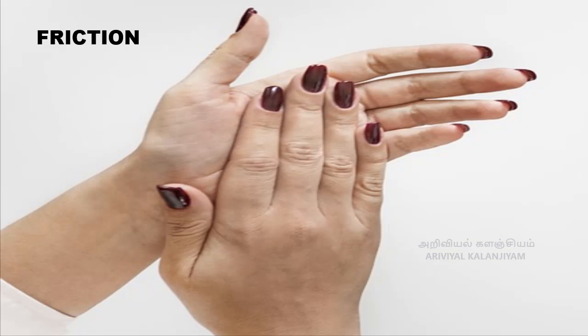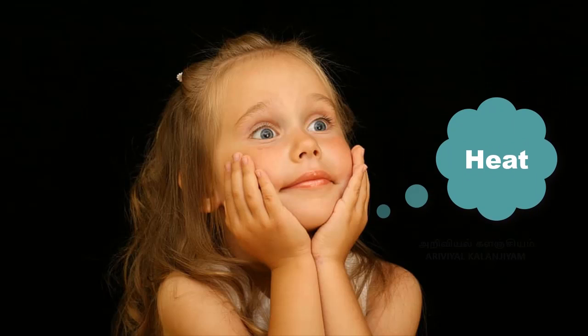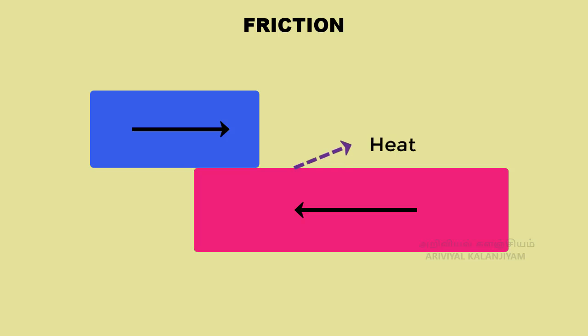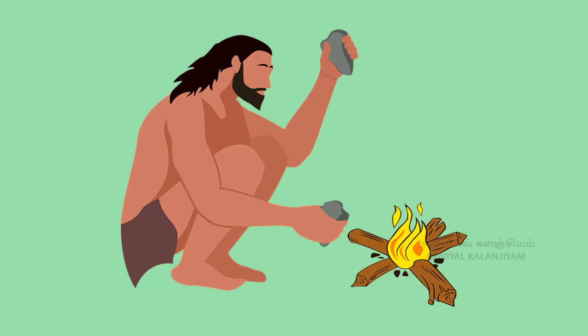Friction. Rub your palms for some time and then hold them to your cheeks. How do you feel? We can generate heat by rubbing two surfaces of some substances. In the past, people used to rub two stones together to light fire.